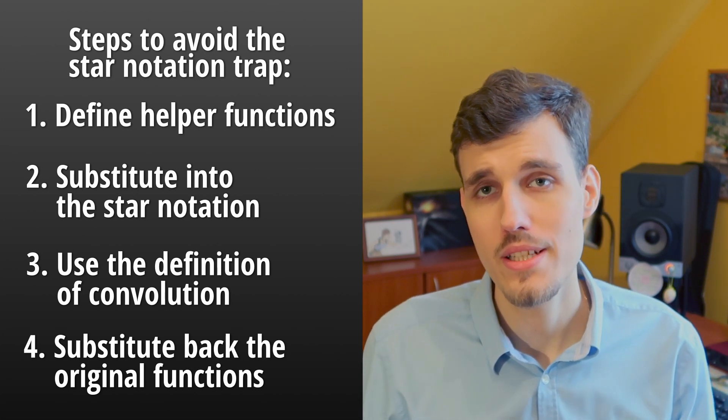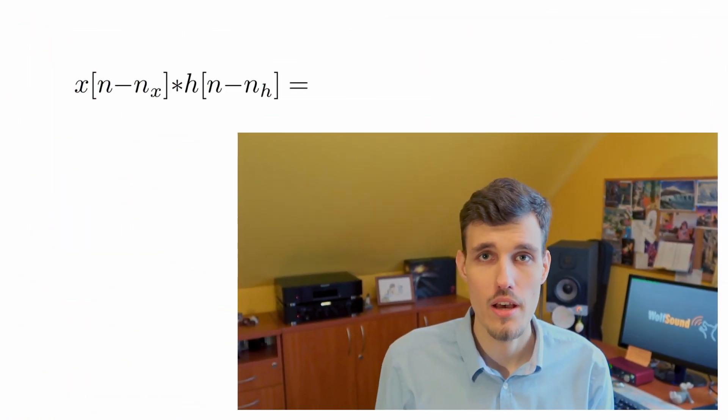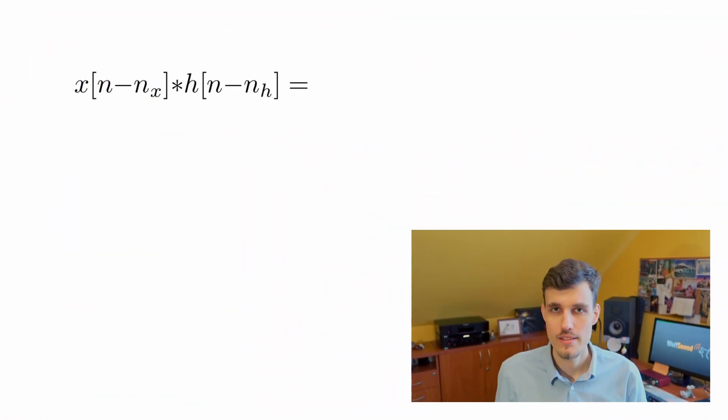It is best to explain how this works through an example. Let's imagine that we have signal x and h and we want to calculate the convolution of their delayed versions. So signal x has delay n_x and signal h has delay n_h.